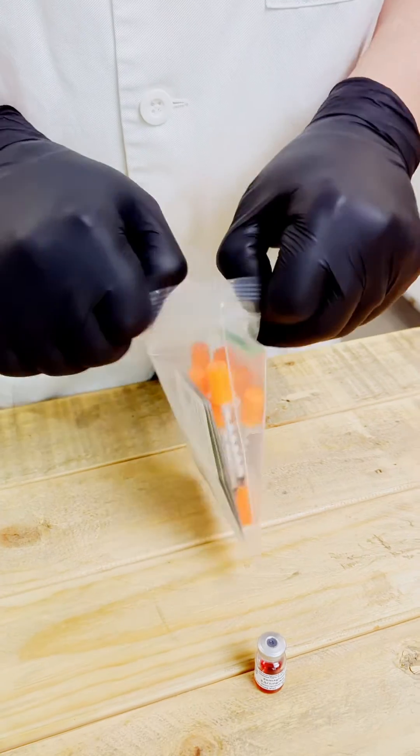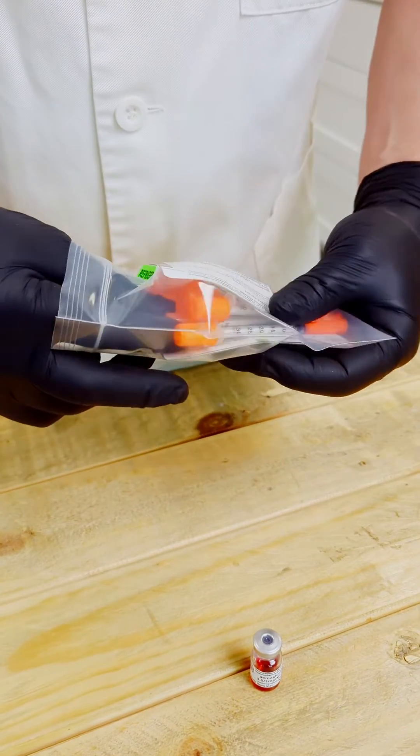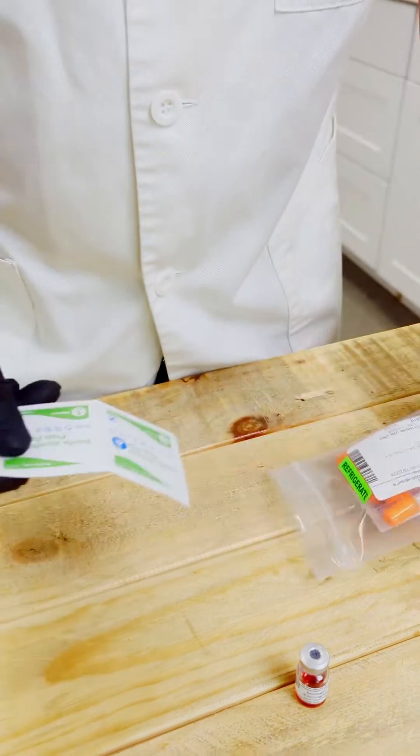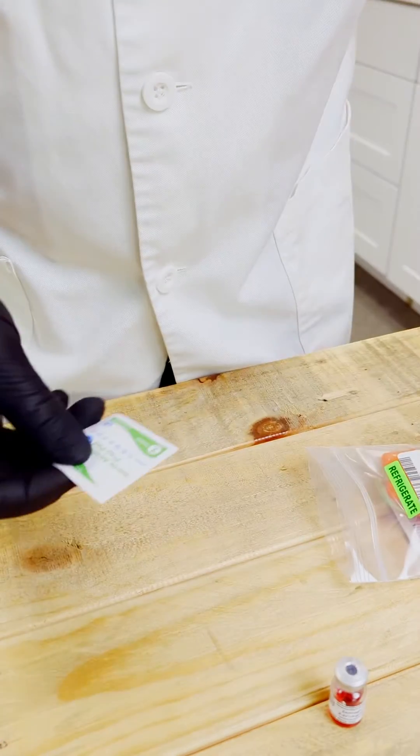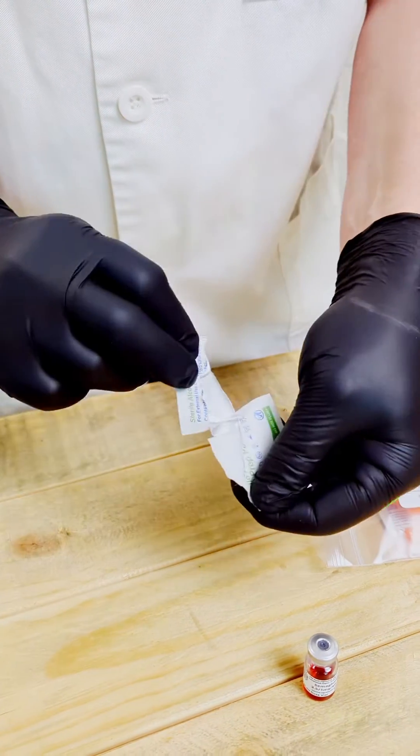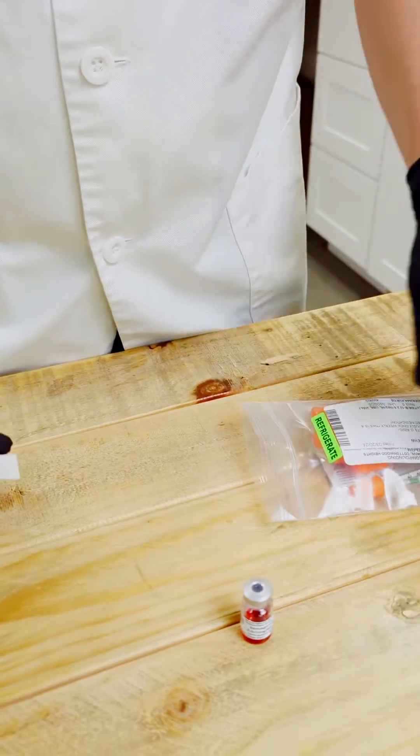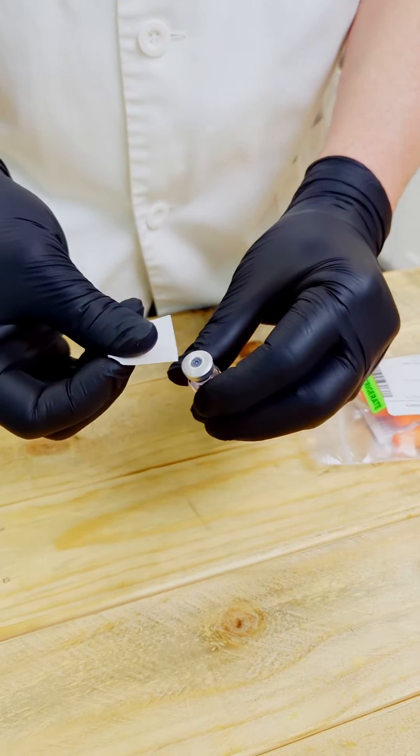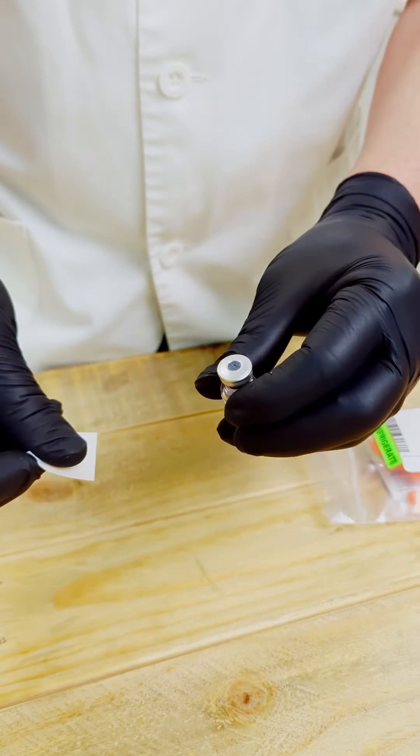We want to open the bag like so. And we will get an alcohol pad out of here. And then we always want to wipe the vial in one direction at least three times.